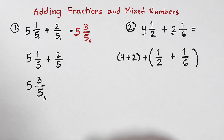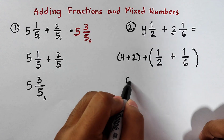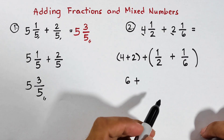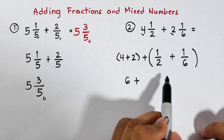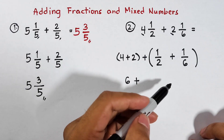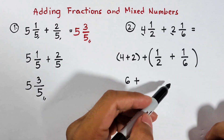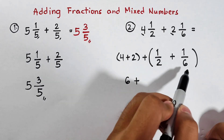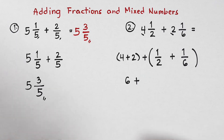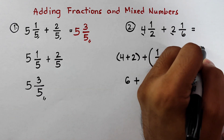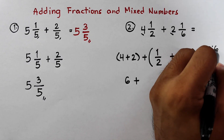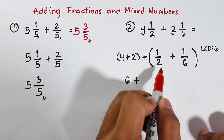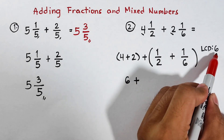Now let's add them. 4 plus 2 is 6, plus our fraction 1 half plus 1 over 6. This is the main problem. I recommend we use the method where we get the same denominator. Here we have 2 and 6, so what is the LCD? Their LCD is simply 6. We need to think of a number to multiply by 2 to get a product of 6.